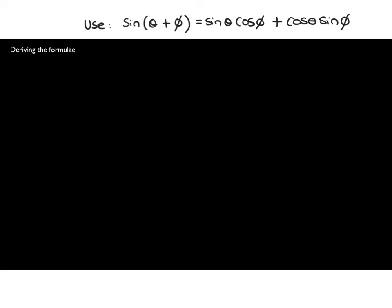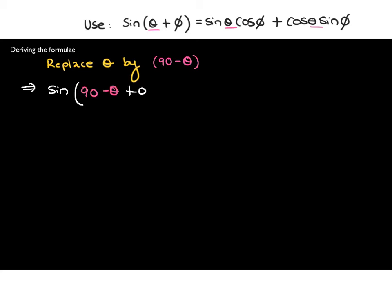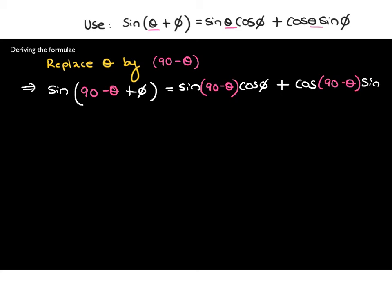Now, going back to the original identity, we'll derive another by replacing theta with (90 − theta) everywhere. This gives: sine of (90 − theta + phi) = sine(90 − theta) cos phi + cos(90 − theta) sine phi. We need to simplify sine(90 − theta) and cos(90 − theta).